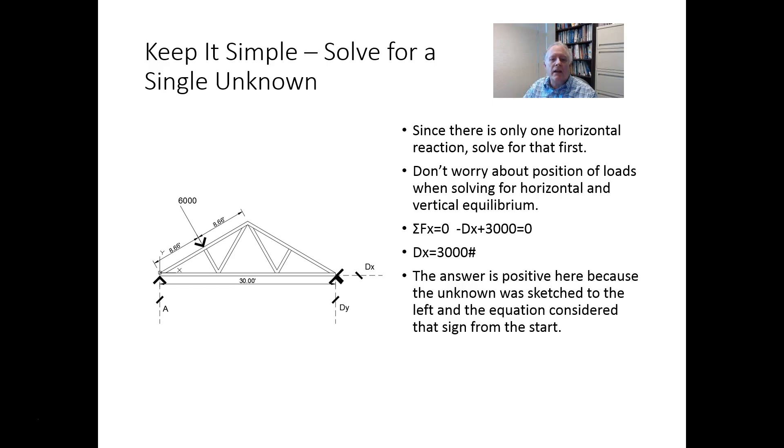Another approach to sketching things to make sure that the signs are always correct is to sketch the unknown arrow in the direction of positive sign. So if I had sketched Dx to the right instead of the left, then the answer would have been negative.